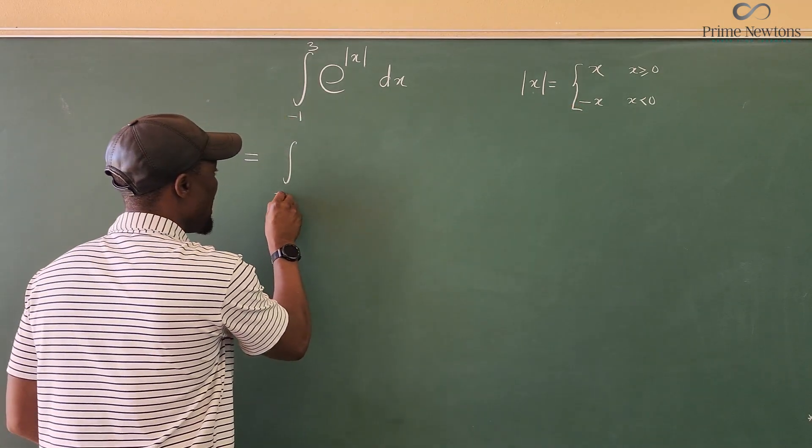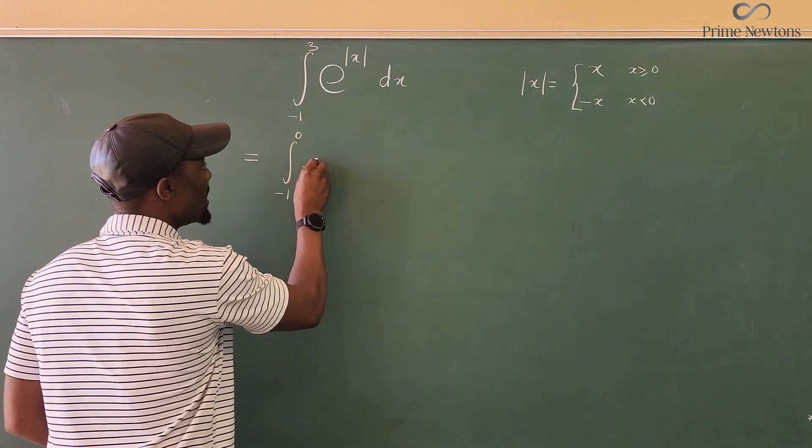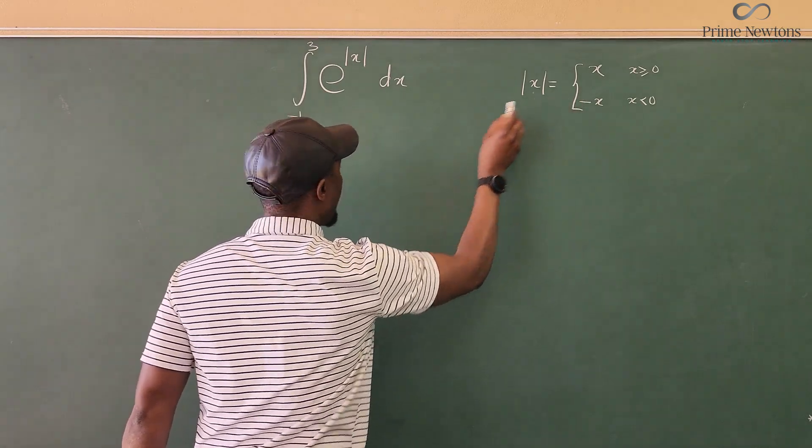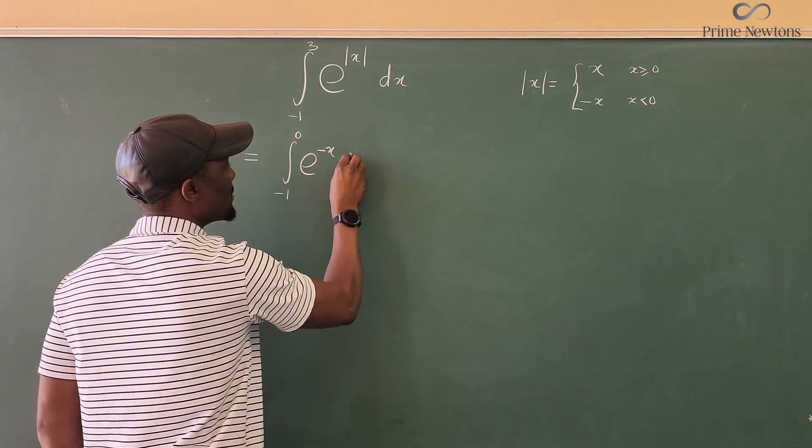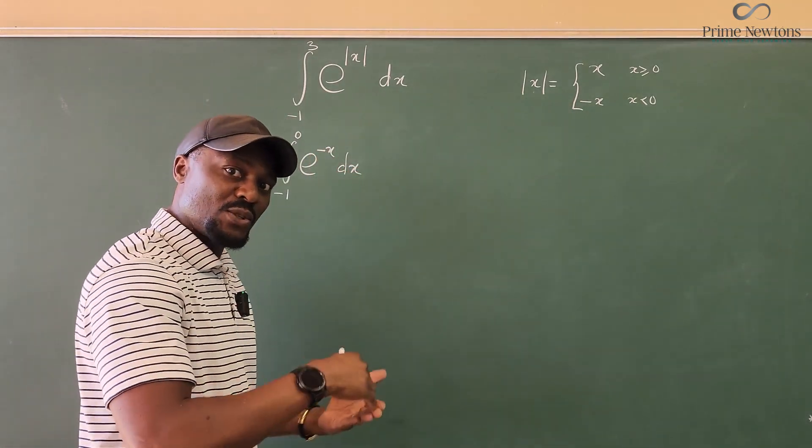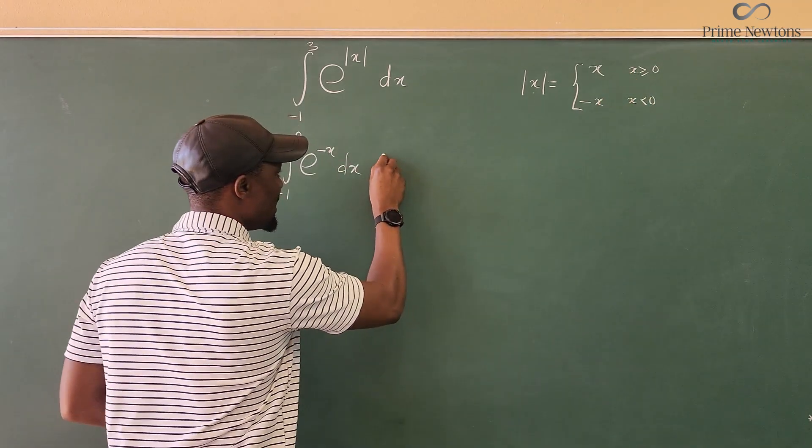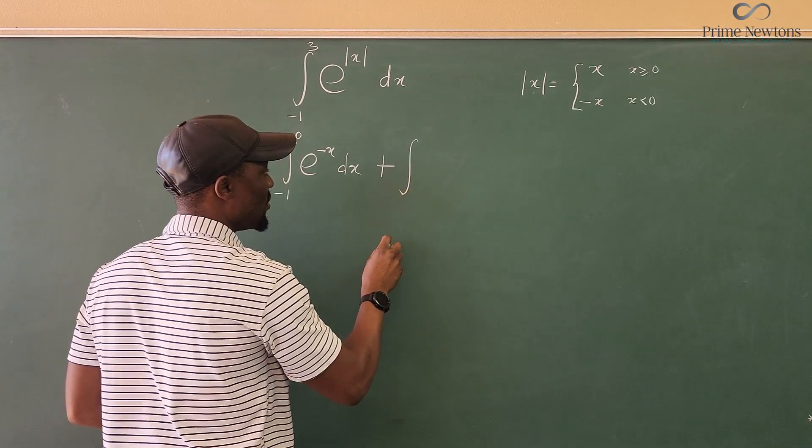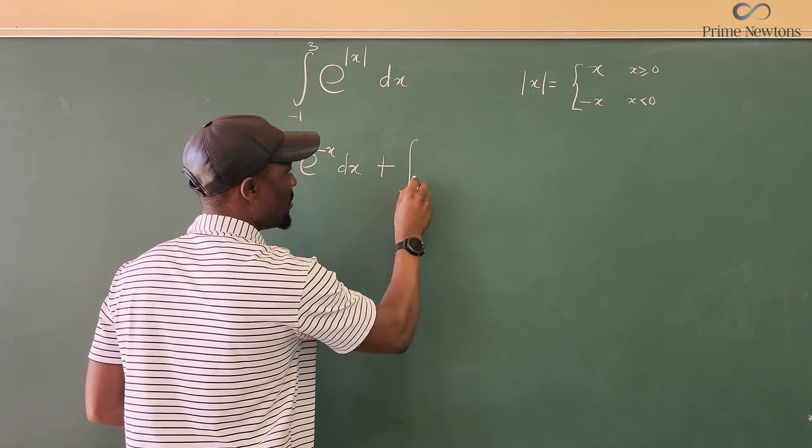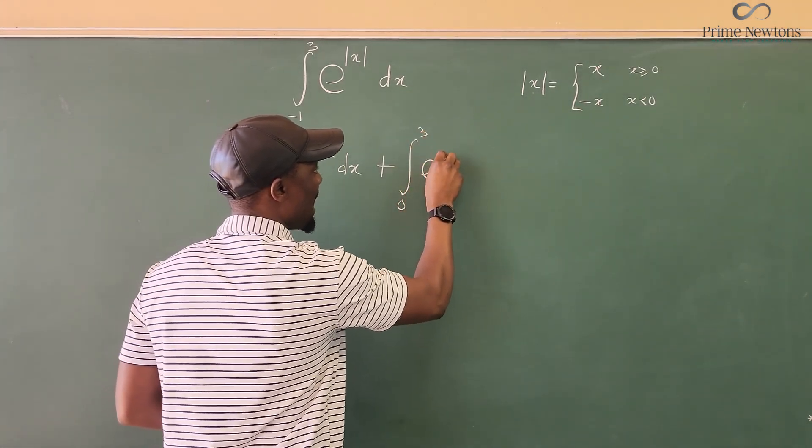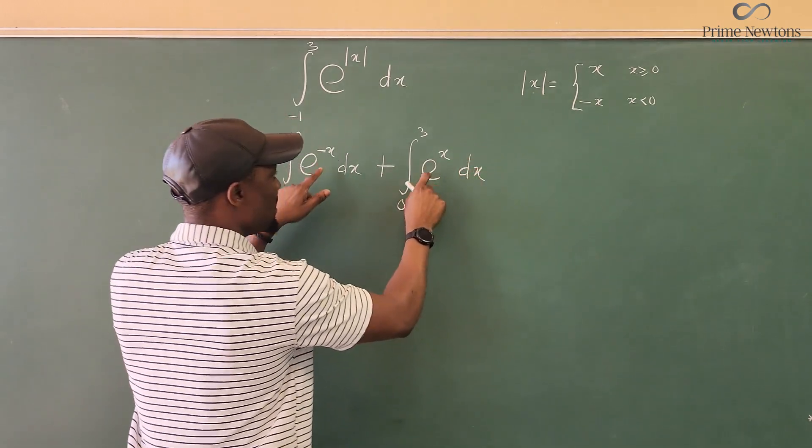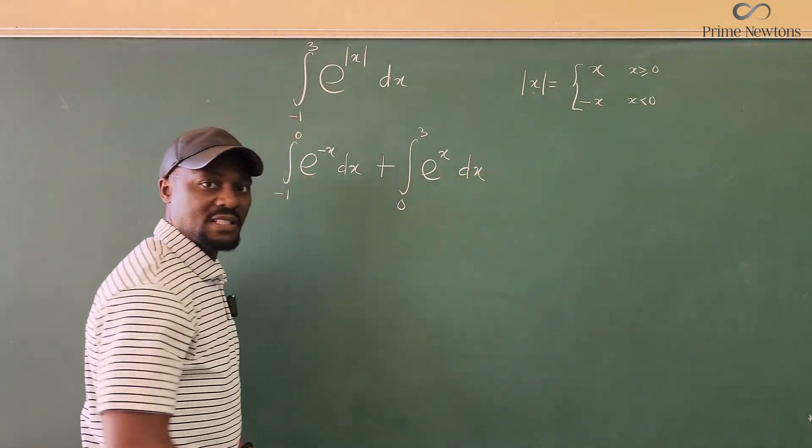So you'll be integrating from minus one to zero, E to the negative X. And once you get to zero, you start obeying this rule. And that rule is you take another integral, which is going to be from zero to three of E to the X DX. You see the two different ones just because of that definition.